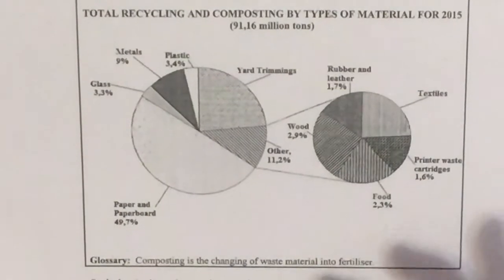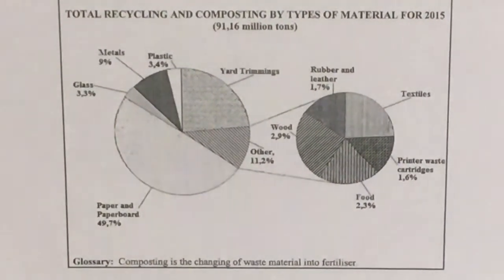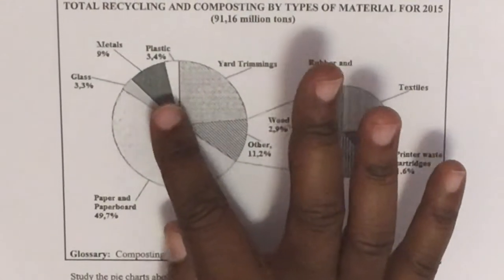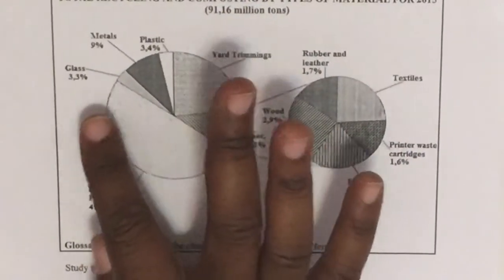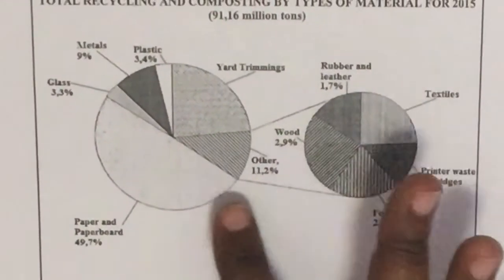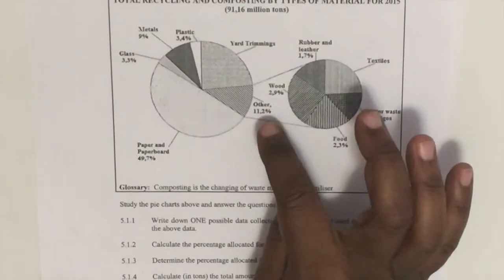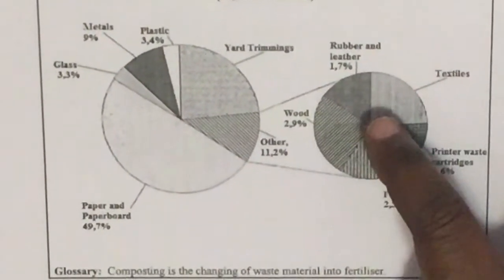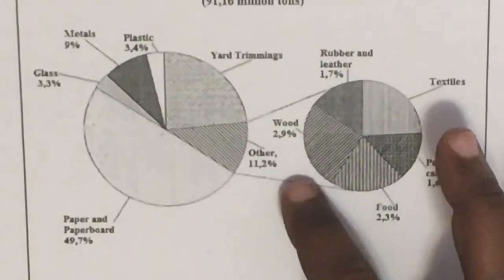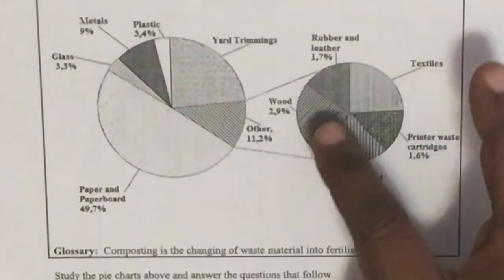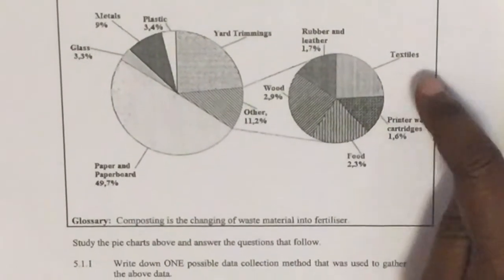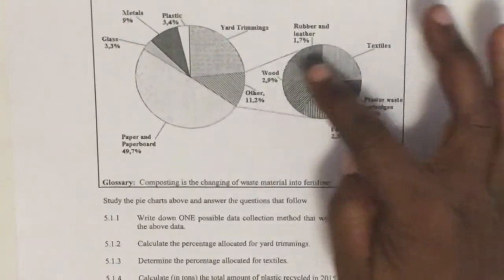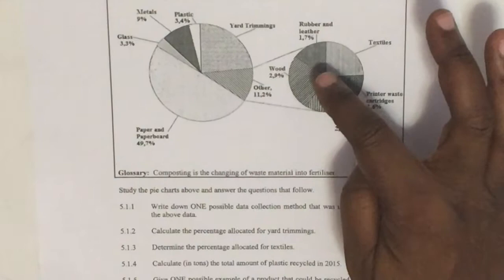Total recycling and composition by types of material for 2015: 19.16 million tons. So this whole chart represents 19.16 million tons. They tell you plastics is 3.4%, glass 3.3%, and they've given the value of each one. There's a specific section called 'others' — materials not part of the main chart — shown in a smaller chart on the side. Others is 11.2 percent, which includes rubber and leather, textile, printer waste cartridges, and food.